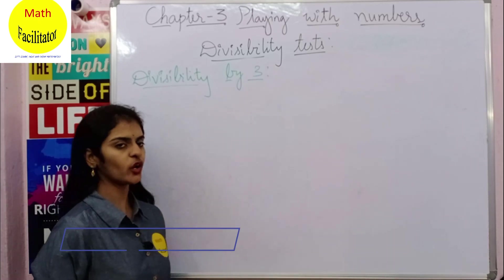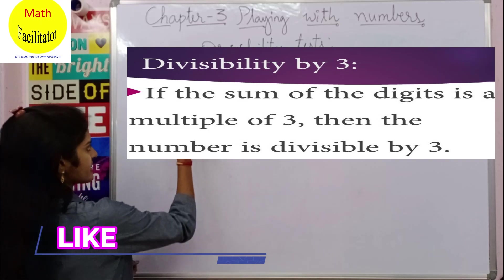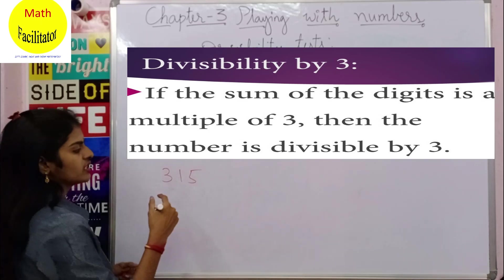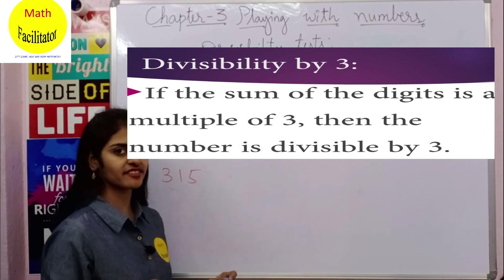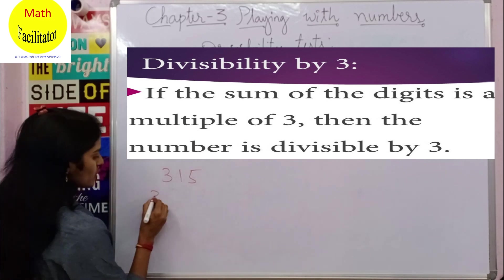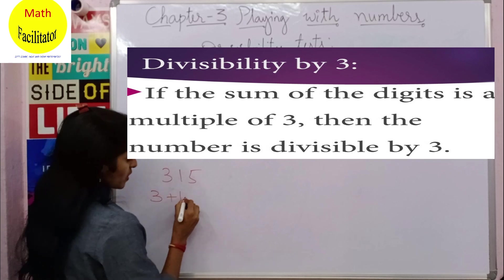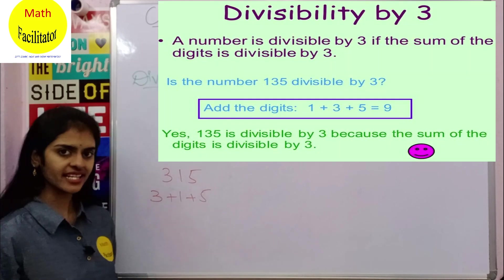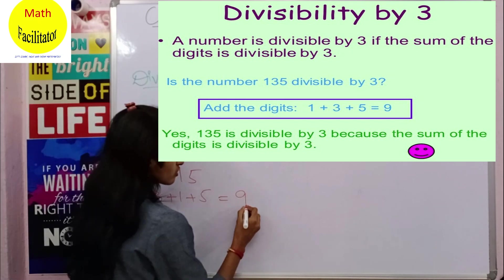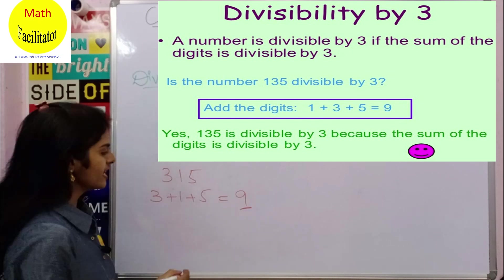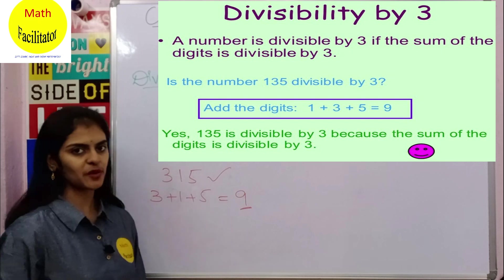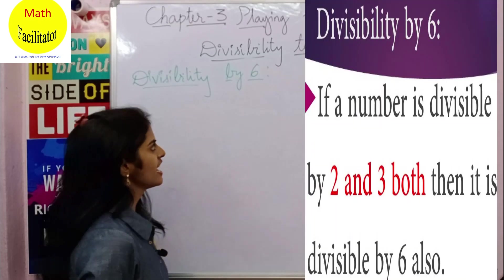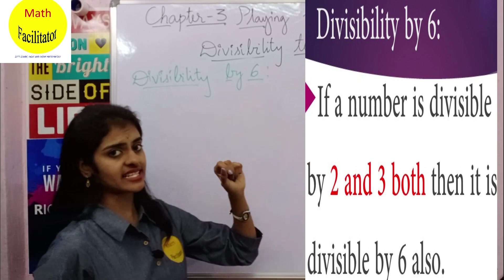Now let us learn the divisibility rule for 3. Take the number 315. To check whether 315 is divisible by 3, you add the digits: 3 plus 1 plus 5 — 3 plus 1 is 4, 4 plus 5 is 9. Since 9 is a multiple of 3, this number is also divisible by 3.